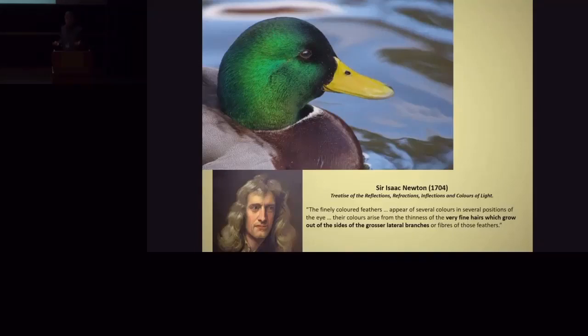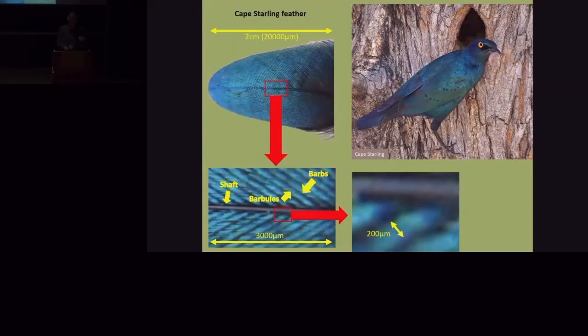But what really gives birds a wow factor is iridescence. Iridescence has fascinated scientists for hundreds of years. And of course, it was the greatest scientist in my view of all time, Isaac Newton, who with a piece of paper, a pencil and a giant brain worked out what the process was. And in 1704, he described how it was the thinness of what he called very fine hairs on the branches of the feathers.